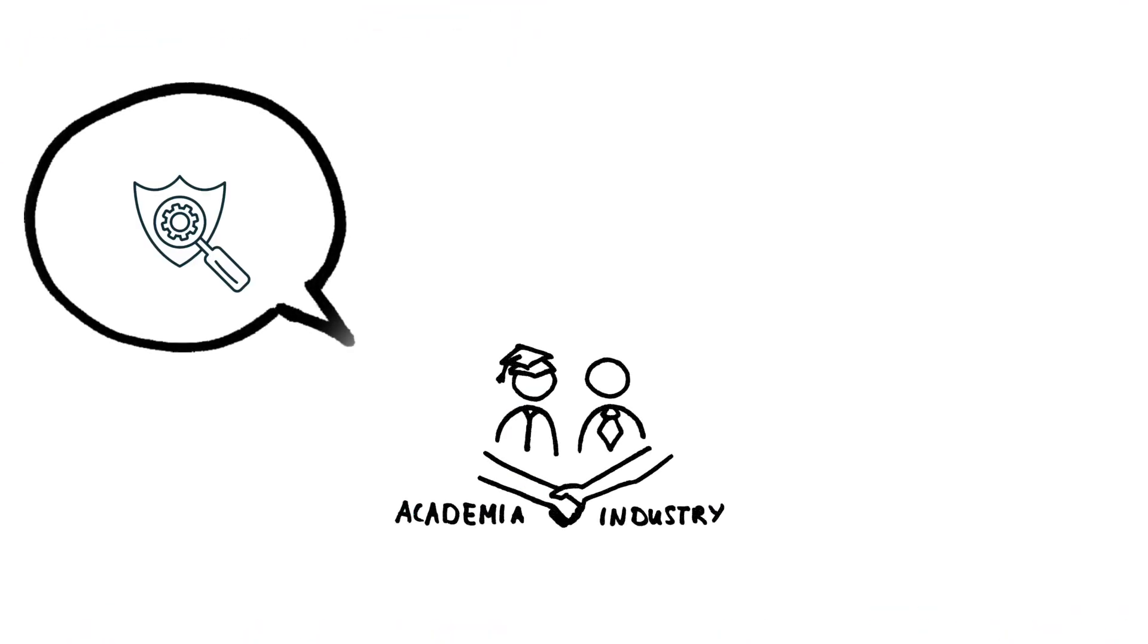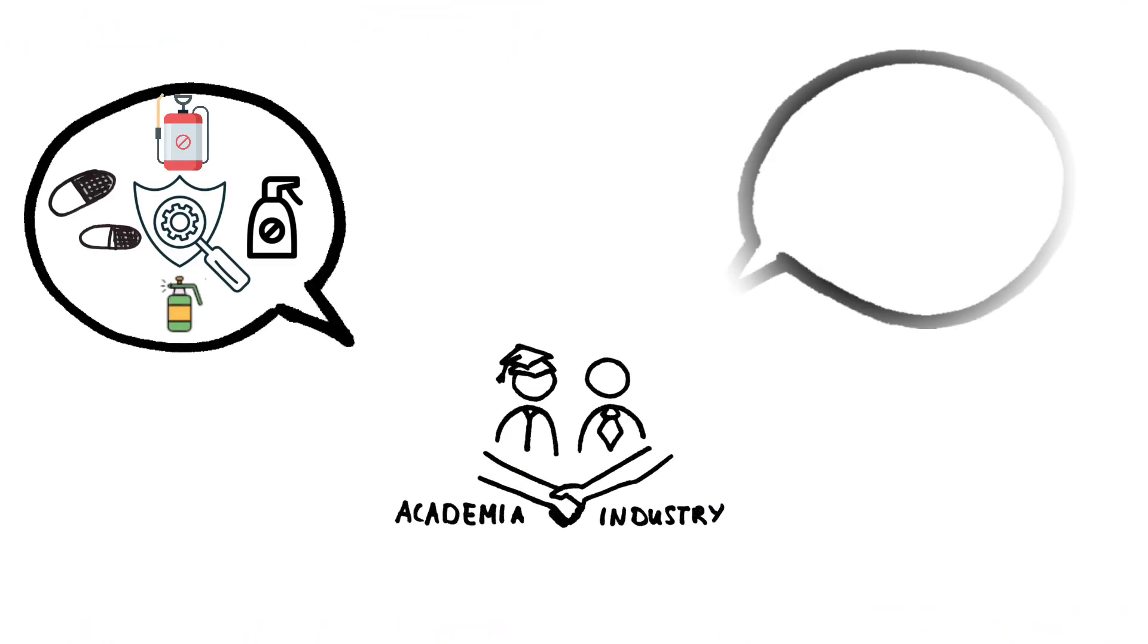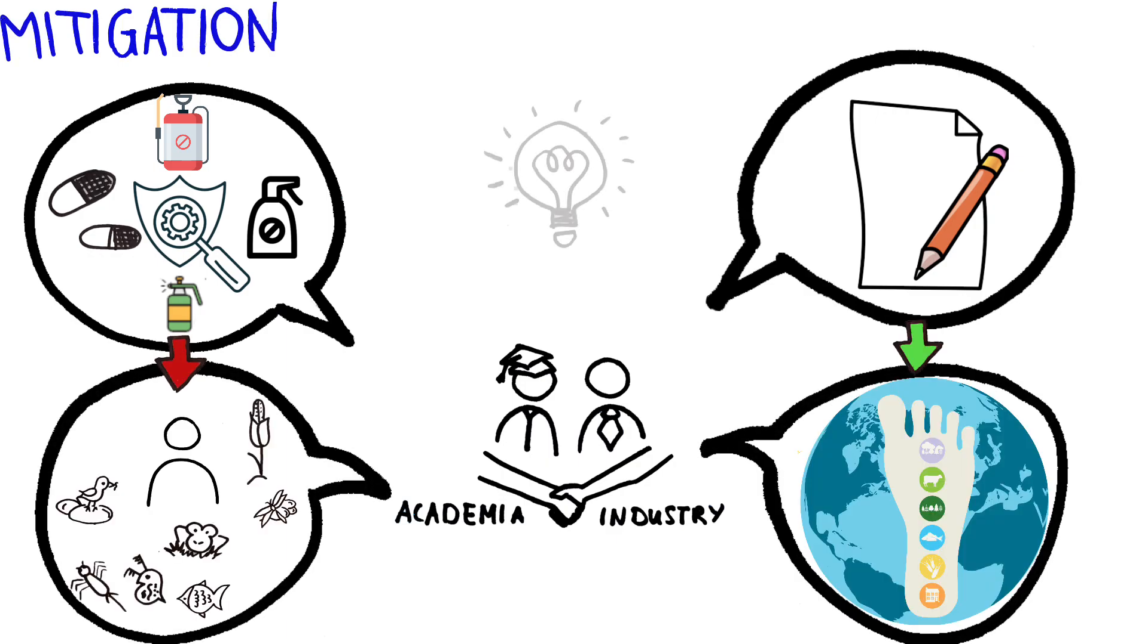Once we understand the risks, we can start developing strategies to help minimize and mitigate the effects of chemicals on humans and the environment, so that we can live within the planet's limits.